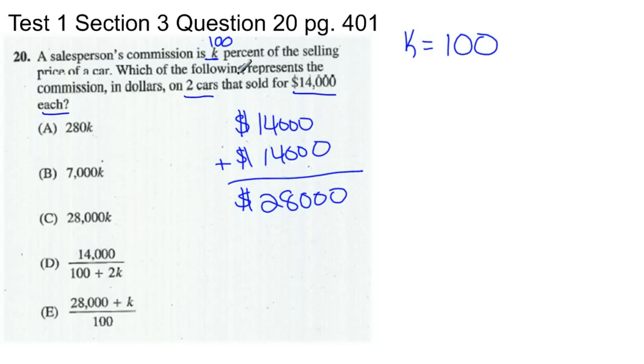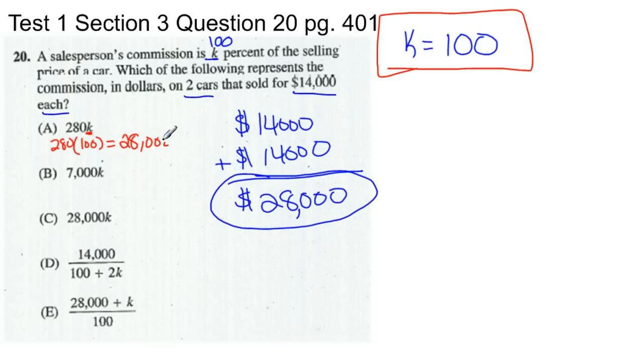Now what do we do with that? Let's look at what the question is asking. Which represents the commission in dollars on two cars? The salesperson's commission is 100 percent, so he's getting all of it. He's making $28,000. There's our answer to the question. Now all we need to do is match our answer here with the answer we came up with when we used K is 100. So let's substitute back into our answer choices. K is 100, so in this case it's 280 times K, which we said was 100. You can see this comes out to be $28,000, which is the answer right off the bat.